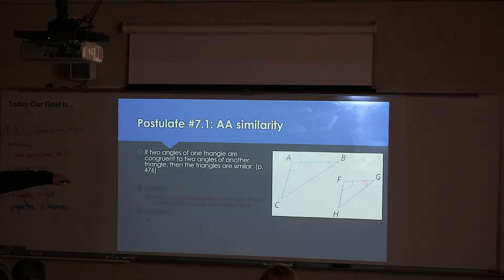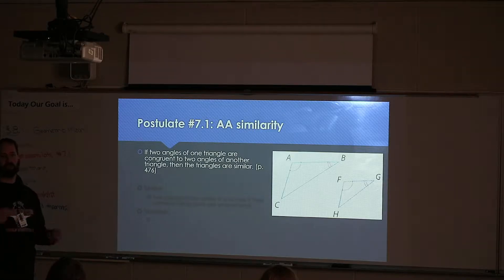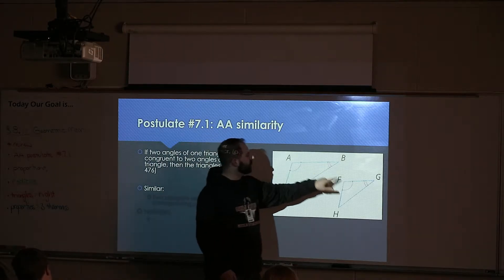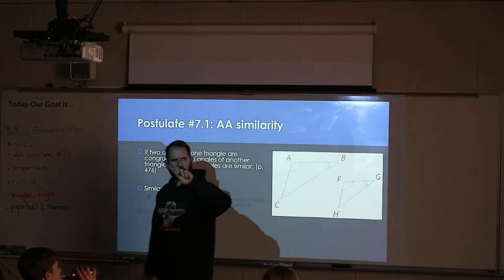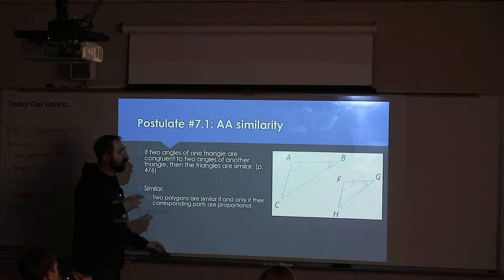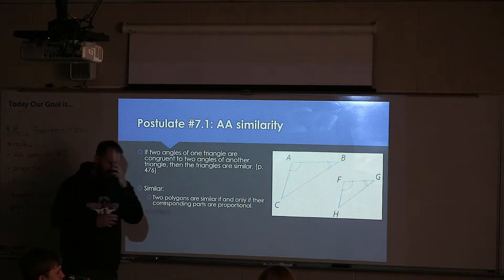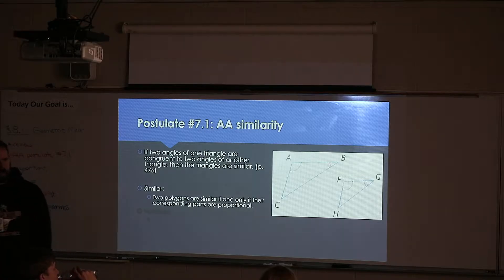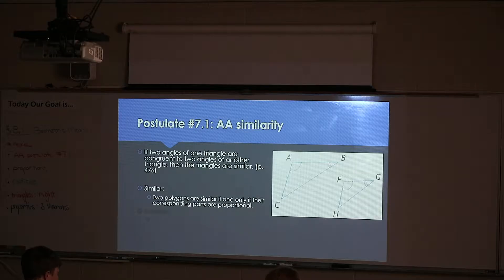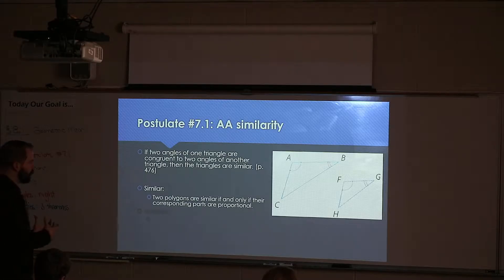Two angles of one triangle match two angles of another. Why this pertains to the word 'similar' is because when you have two angles that match, it actually forces the triangles to be in proportion with each other. That's actually the definition of similarity — that pictures are almost identical to each other, they're just scaled.